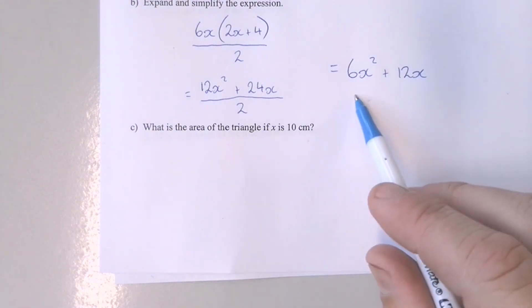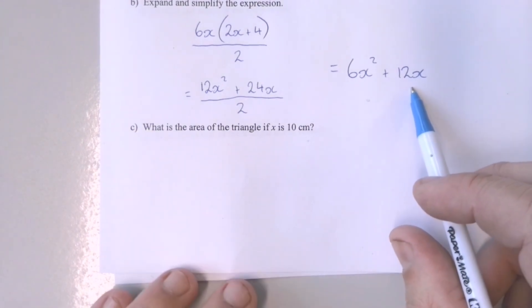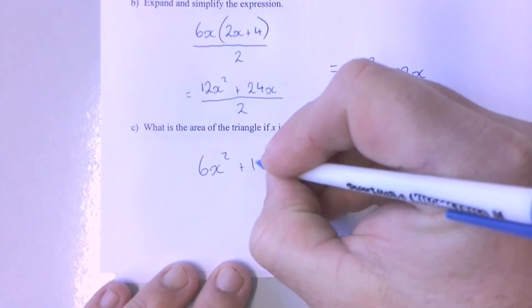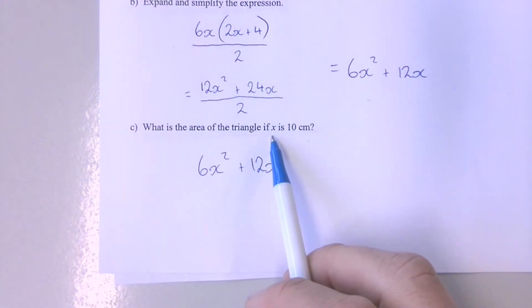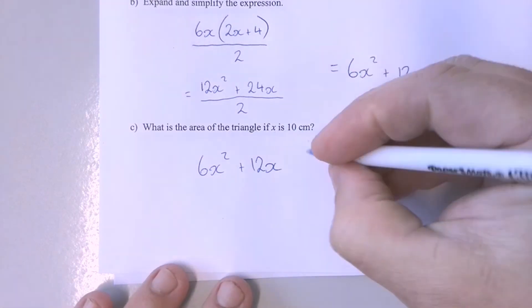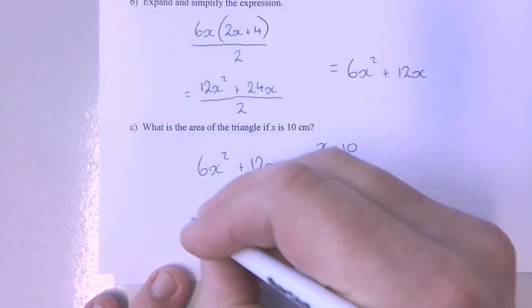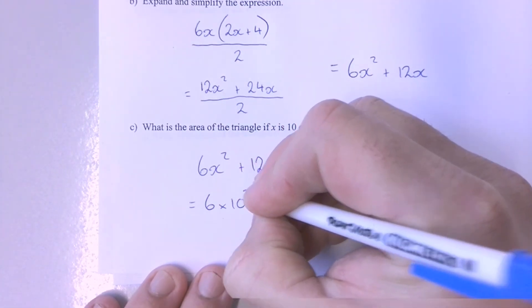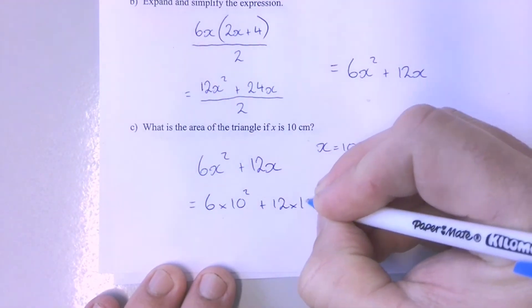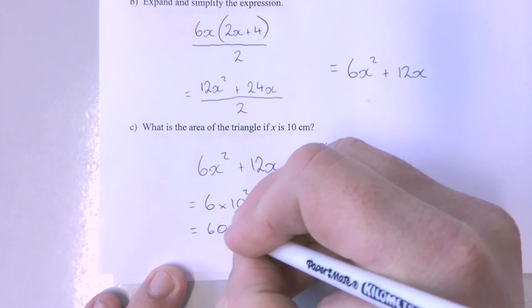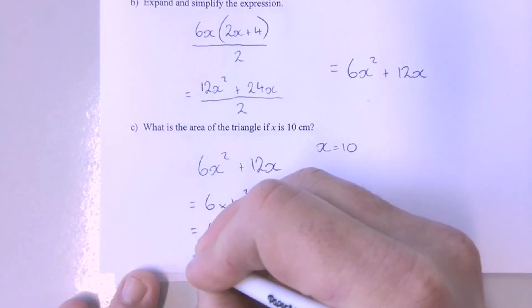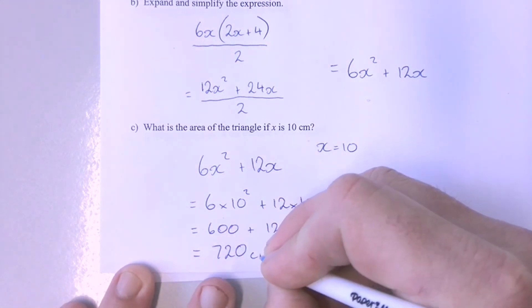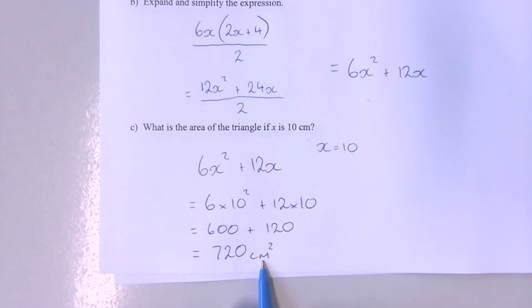Question 6C asks us to take our simplified expression — 6X squared plus 12X — and substitute in a given value of X. X is 10, so wherever we see an X we'll substitute a 10. That gives us 6 times 10 squared plus 12 times 10, which is 600 plus 120, giving us a total of 720 square centimetres. Not forgetting that it's area, we're not going to forget our units.